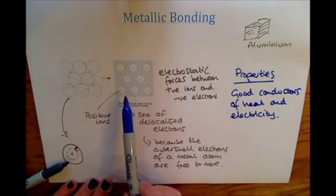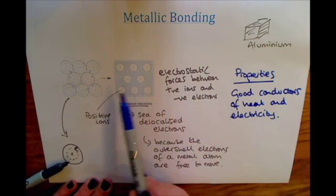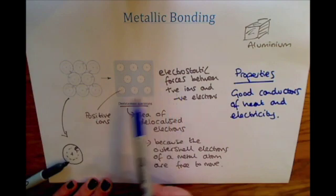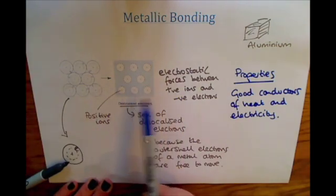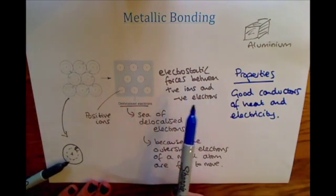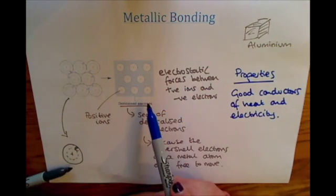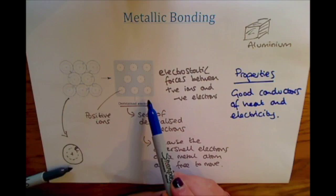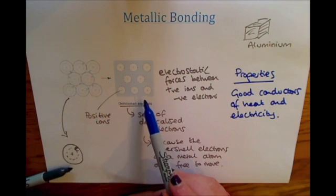To be a good conductor of heat, those electrons are free to move and can collide with other electrons, passing on energy through the metal. The ability of the metal to conduct heat and electricity depends on the ability of the electrons to move throughout the metal.